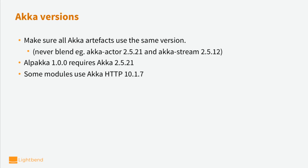Talking about compatibility, Akka versions are important for Alpaca as well. The most important factor is to never blend Akka artifacts of different versions — so if you have Akka Actor 2.5.21, you should have 2.5.21 of all other Akka artifacts. Alpaca 1.0 requires Akka 2.5.21, and since Akka is binary compatible, you can upgrade Akka versions within the 2.5 line without upgrading Alpaca. Some modules in Alpaca use Akka HTTP, and the version used there is 10.1.7; you can upgrade to later versions of the 10.1 release line.